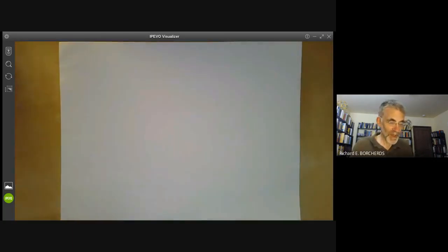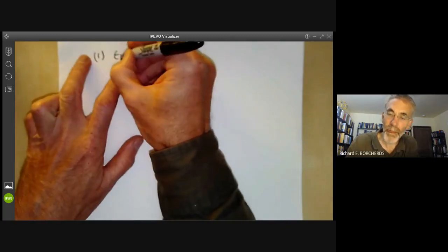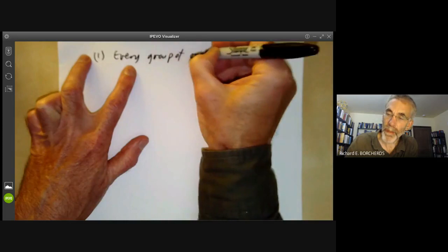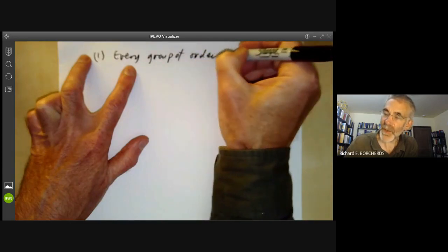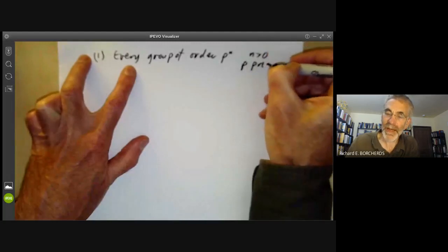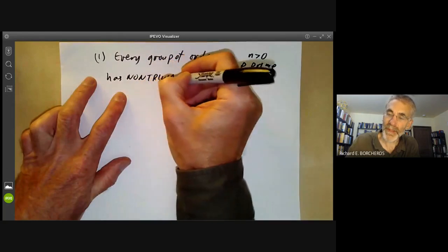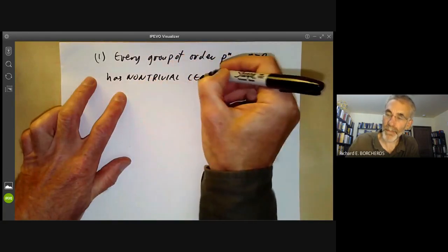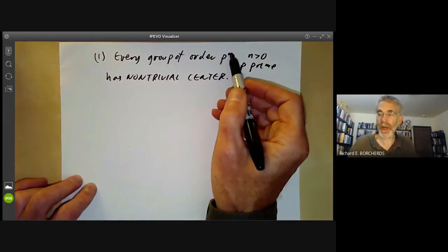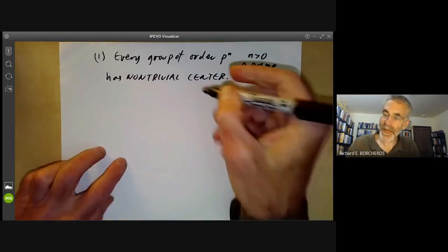And the first one is every group of order P to the N, this is where N is greater than 0 and P is prime, has non-trivial centre. So we're actually only going to use, in this lecture, we're only going to use this for groups of order P squared, but later on this will be useful for higher powers of P.